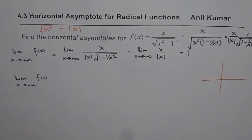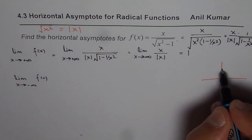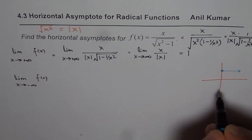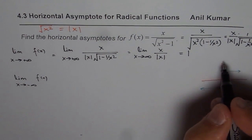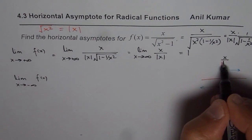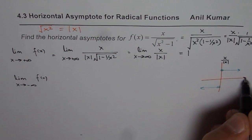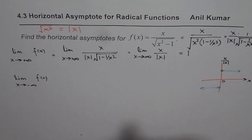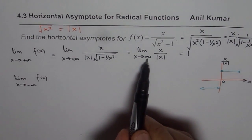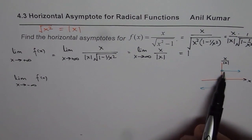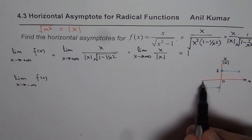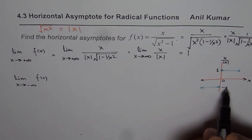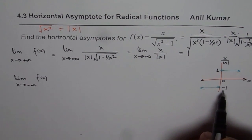If you sketch the x over absolute x function — let me sketch it here and show you — it is a very important concept to understand. This function can be drawn as a step function. As x approaches positive infinity, the function approaches positive 1. When x approaches negative infinity, the function approaches minus 1.